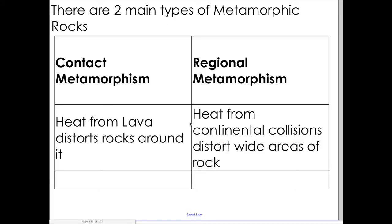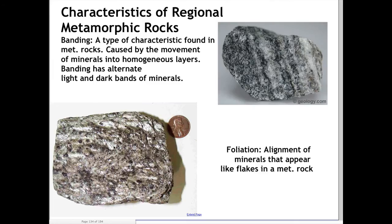Metamorphic rocks form in two distinct ways. The first, just described, is known as regional metamorphism — it forms when huge continental collisions occur over large areas of land. The second type is contact metamorphism, which occurs when lava and the heat of the lava itself distorts the rocks it is touching or near. That might happen in a volcano, as I'll show you in a moment.